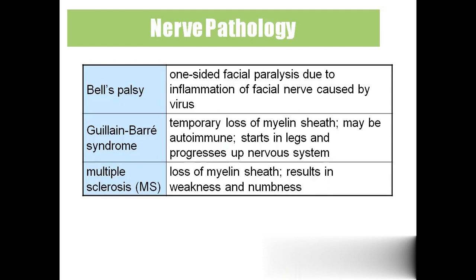'Guillain-Barré syndrome' is the temporary loss of the myelin sheath, which is an autoimmune disease where our own antigens fight with our own antibodies. Initially it starts in the legs, then progresses upward, and finally attacks the heart and lungs.